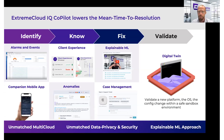The goal of Xtreme Cloud IQ Copilot is to use machine learning, big data, and AIOps capabilities to lower the mean time to resolution for IT teams. Mean time to resolution has multiple components: you've got to identify problems, know what's causing them, fix them, and validate that the problem has been resolved and that your network is improving. Copilot has built out capabilities along each of those different verticals.